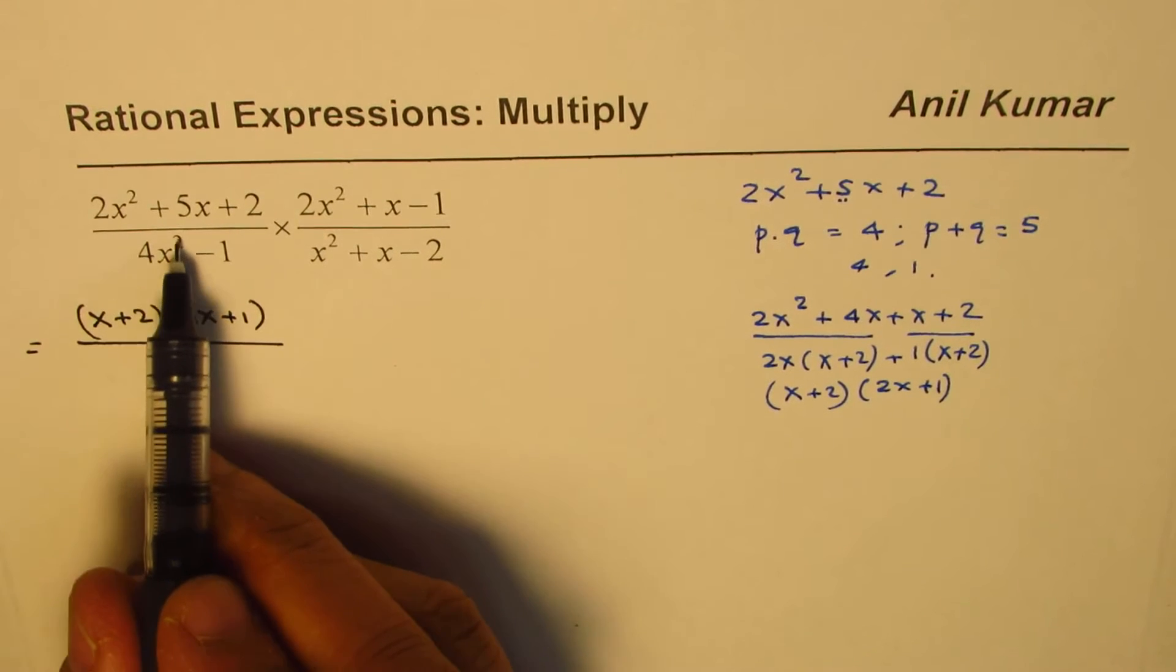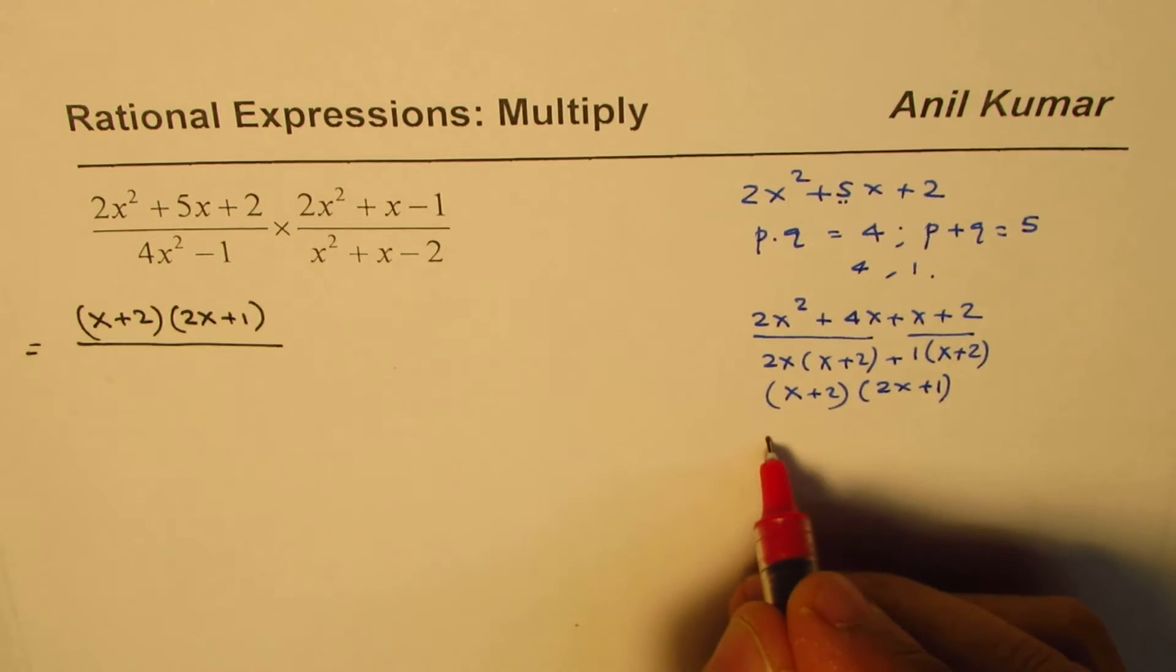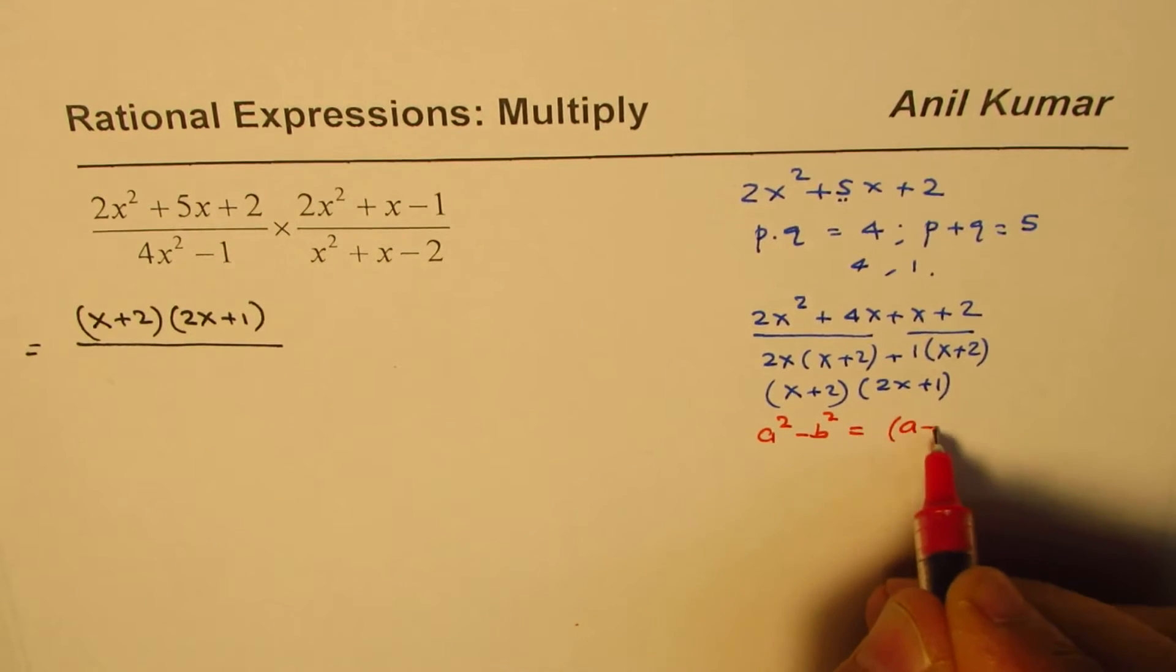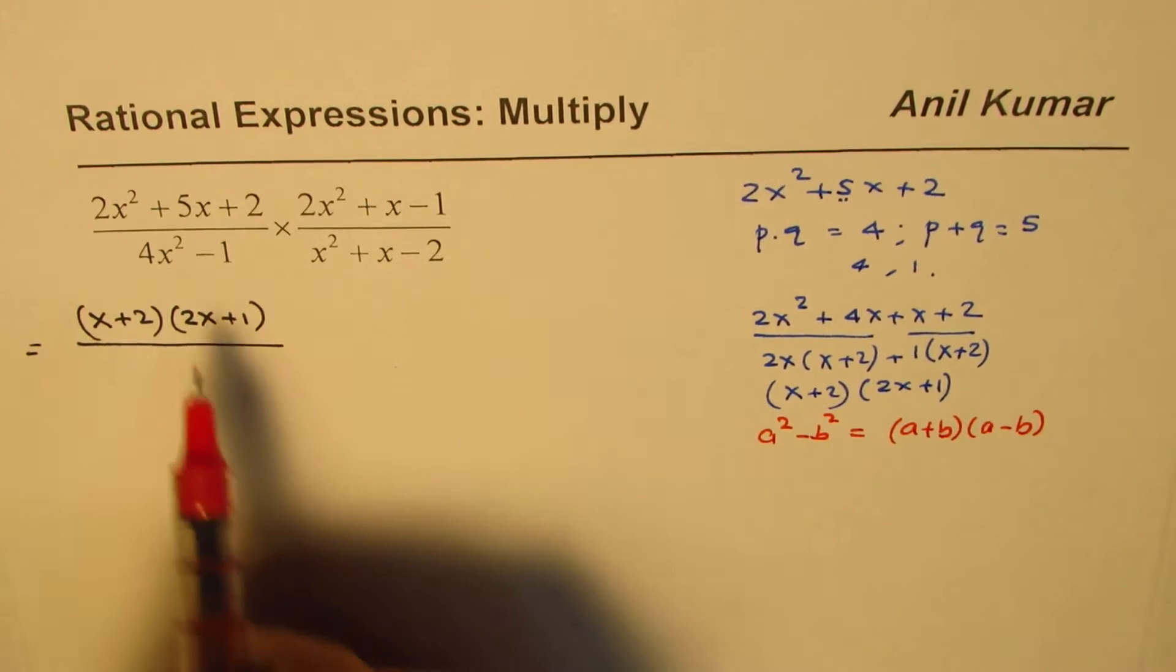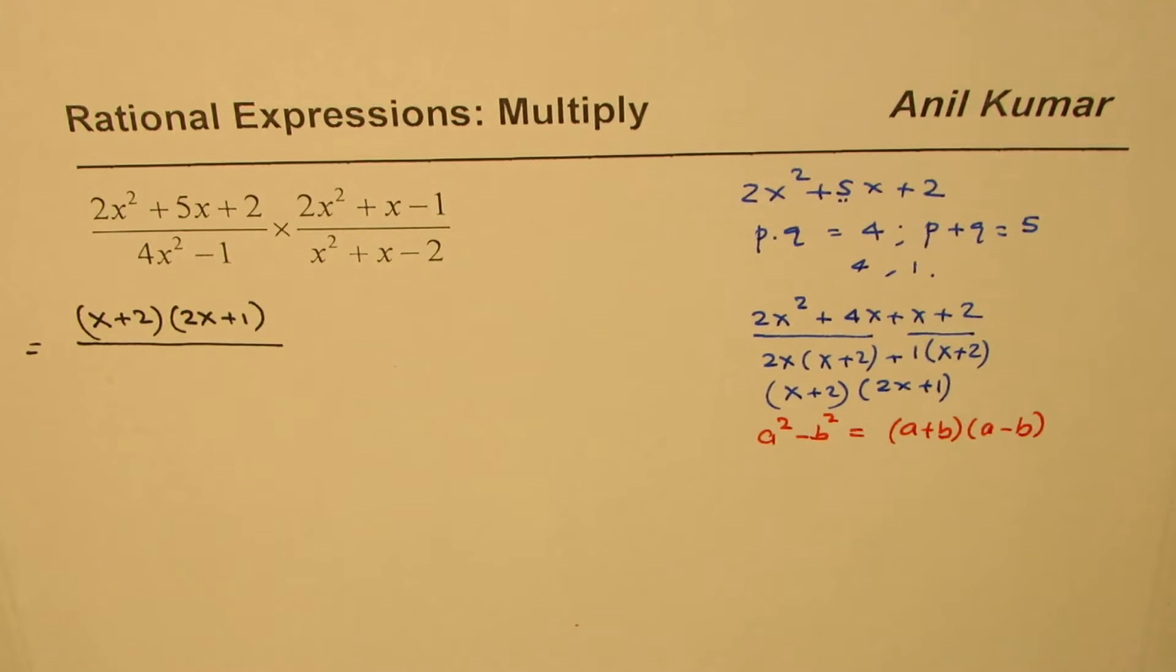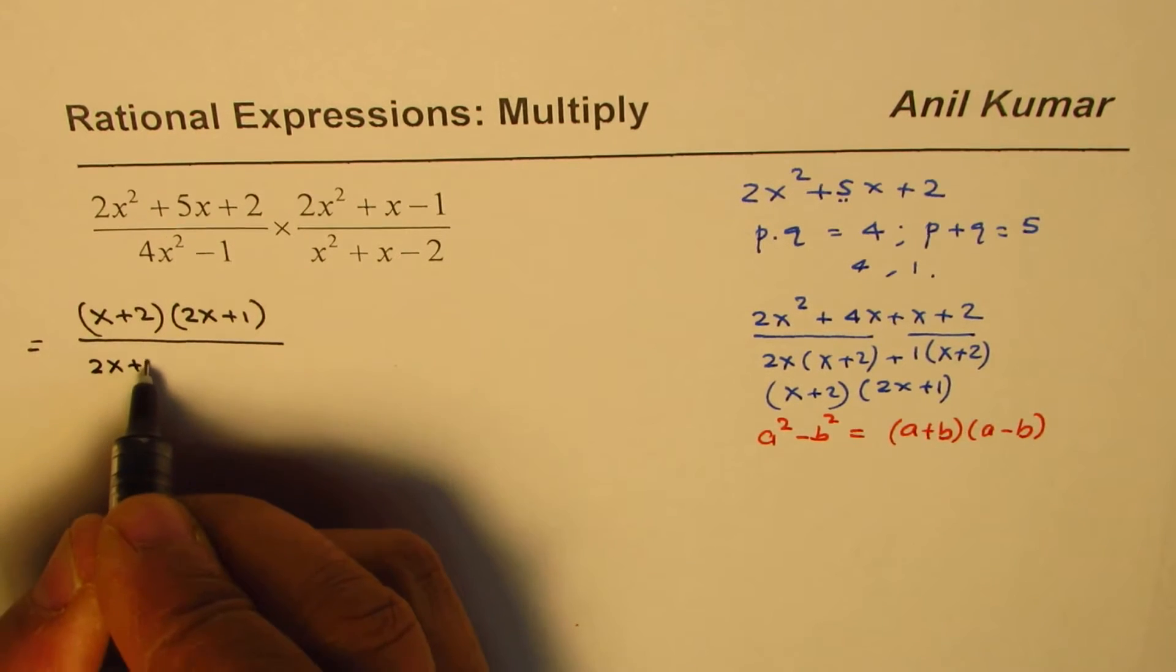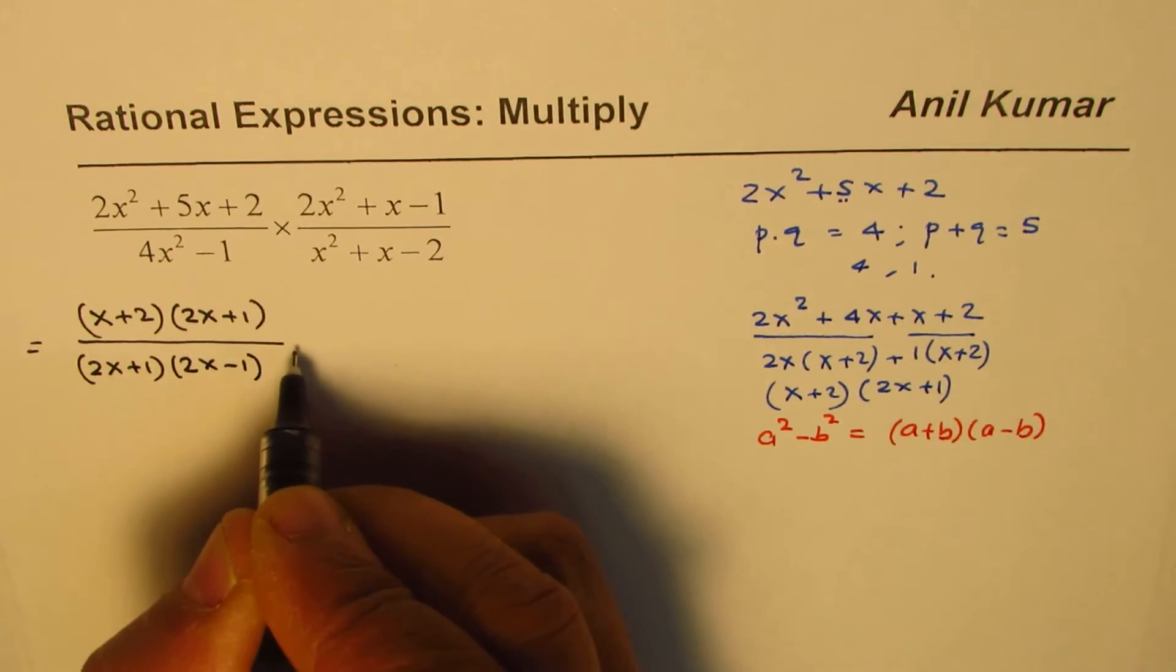Denominator here is 4x squared minus 1. We could use difference of squares. I hope you remember a squared minus b squared equals to a plus b times a minus b. a in this case is 2x. So, we could write this as 2x plus 1 times 2x minus 1 times.